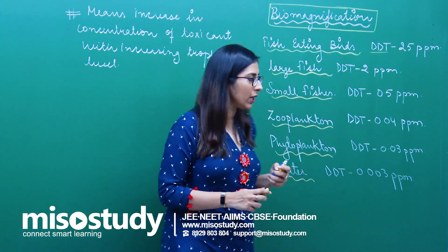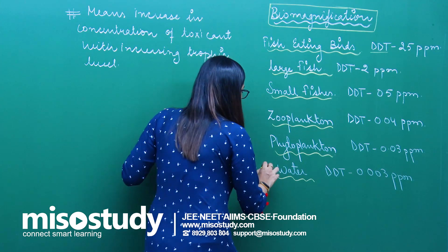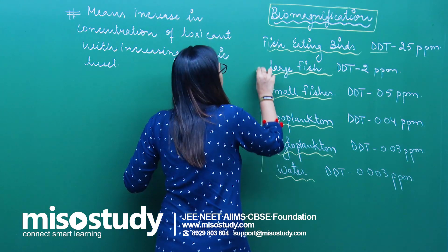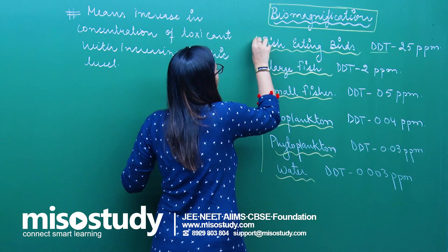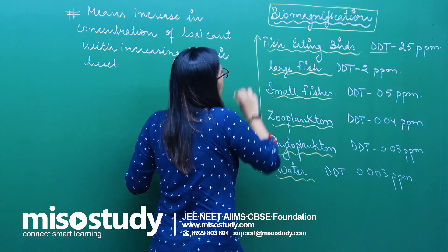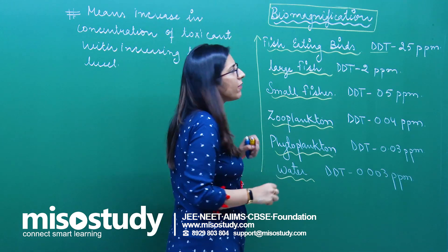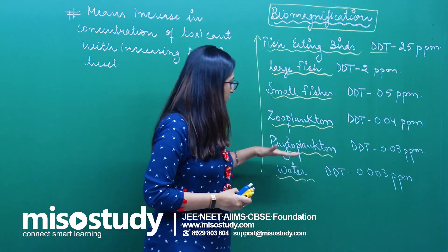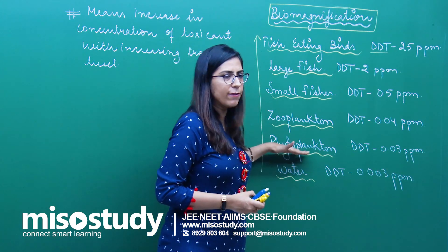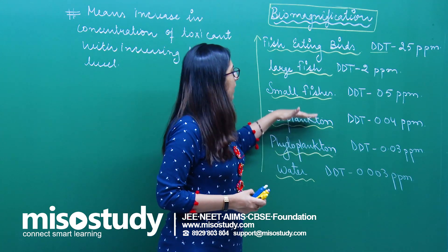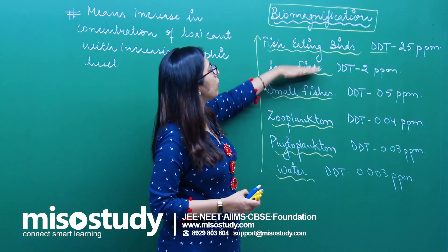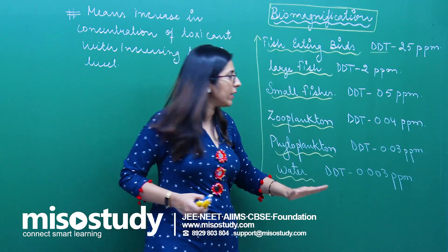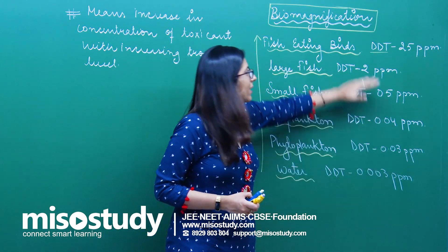In fish-eating birds the DDT concentration came out to be 25 ppm. This is what we call biomagnification — the increase in concentration of toxicant with increasing trophic level, from the first through the fifth trophic level.